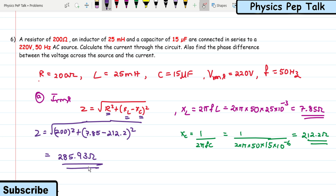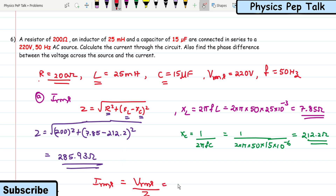For part (a), current in the circuit: I_RMS = V_RMS / Z = 220 / 285.93 = 0.769 amperes. This is the value of current flowing through the circuit and the answer for part (a).